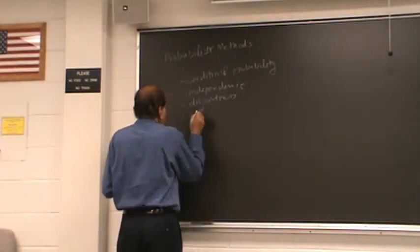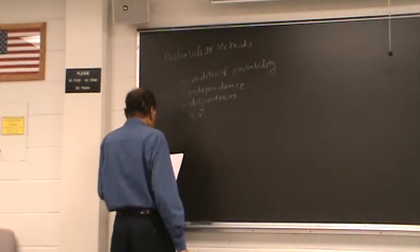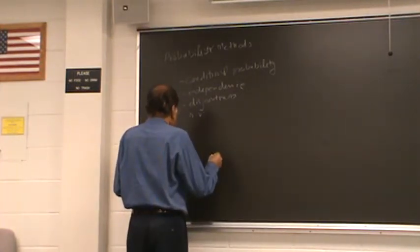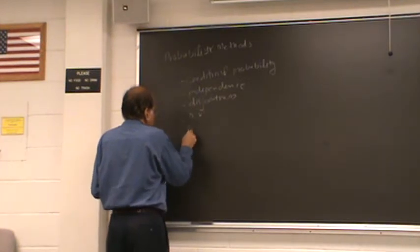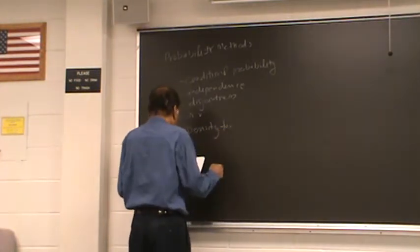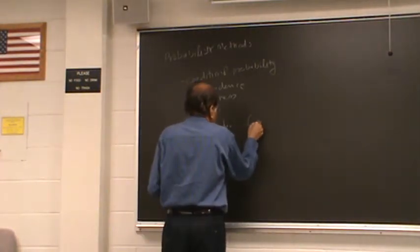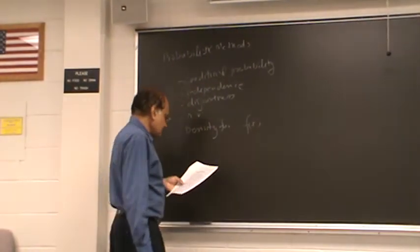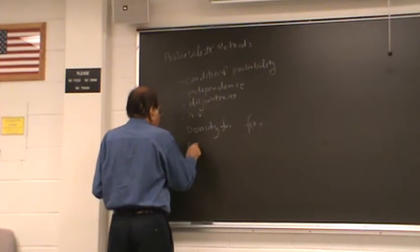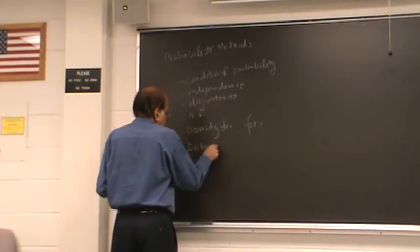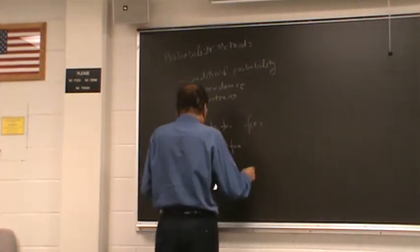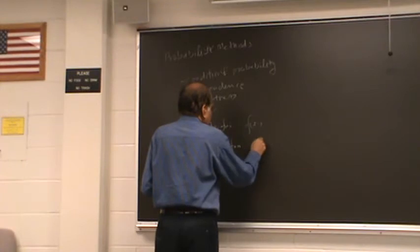And we were talking about random variables. And last time I was mentioning about the density function, probability function, which we often indicate this way. And then there is a discrete version of the same thing. And then we have distribution function, probability distribution function.